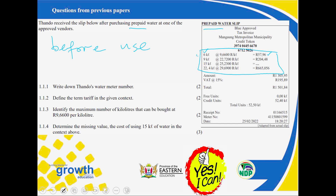Looking at the water slip, we have the Mangaung Metropolitan Municipality Credit Token. My focus is on the tariff section. We have the first 6 kilolitres at R9.66 per kilolitre, giving R57.96. In block 2, the maximum is 9 kilolitres multiplied by R22.72, giving R204.48. In block 3, we have 15 kilolitres multiplied by R25.23 — that value is missing and must be calculated. In block 4, we have 22.4 kilolitres at R29.69.